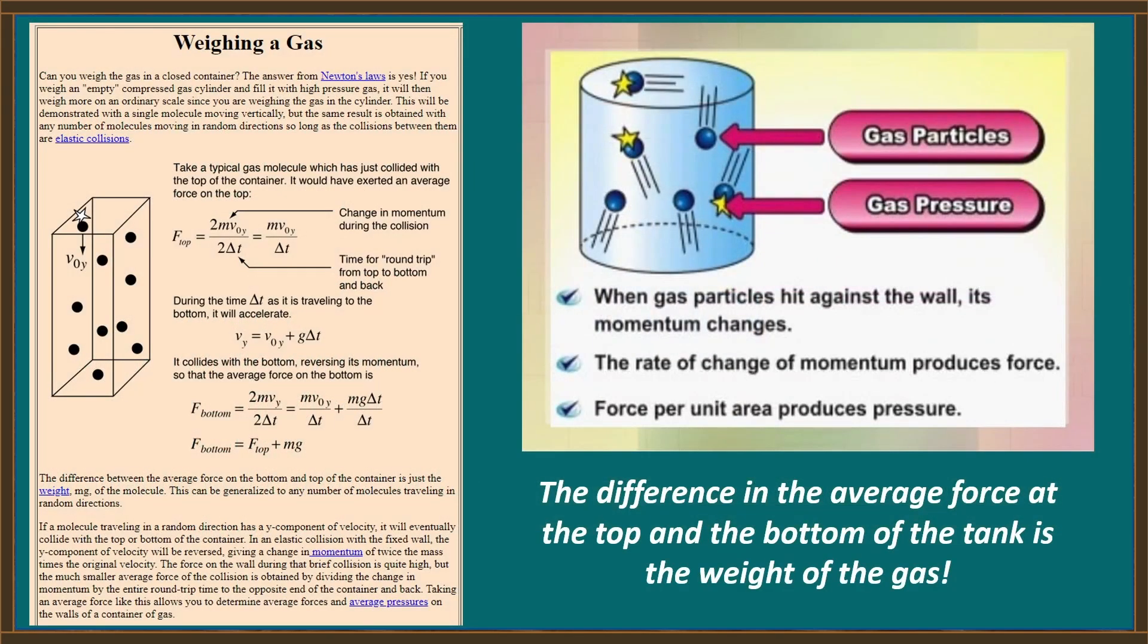This is really pretty simple. If we take a typical gas molecule which has just collided with the top of the container, it would have exerted an average force on the top, which is equal to its mass times its velocity in the vertical direction, divided by the length of time it spent traveling from the bottom of the tank to the top of the tank.